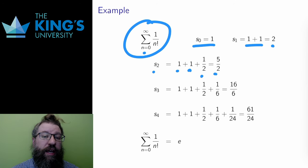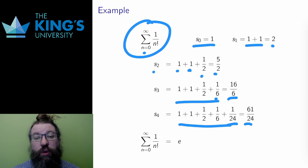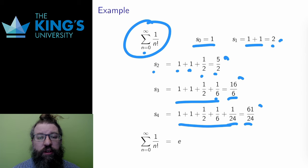S3 is 1 plus 1 plus 1 half, plus 1 over 6, 1 over 3 factorial, which is 6. All of that adds up to 16 over 6. The next factorial is 4 factorial is 24, so the next term I'm going to add is 1 over 24, and S4 is going to add up to 61 over 24.